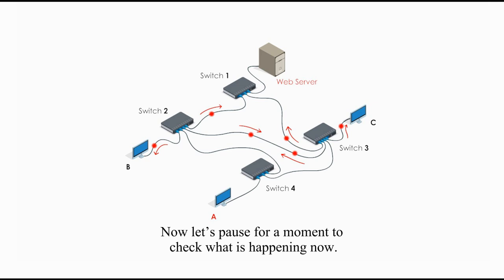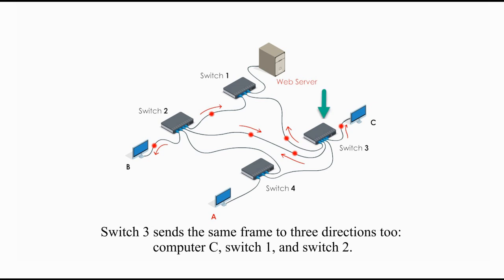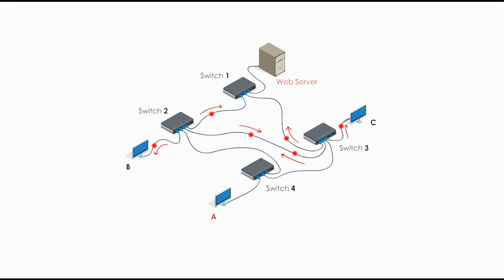Now, let's pause for a moment to check what's happening now. Switch 2 sends the frame to three directions, computer B, switch 1, and switch 3. Switch 3 sends the same frame to three directions, computer C, switch 1, and switch 2. We might see a problem already at this point. Switch 1, switch 2, and switch 3 get the same frame from different sources. Switch 2 gets it from switch 3, and switch 3 gets it from switch 2, and switch 1 gets 2 copies from both switch 2 and switch 3.